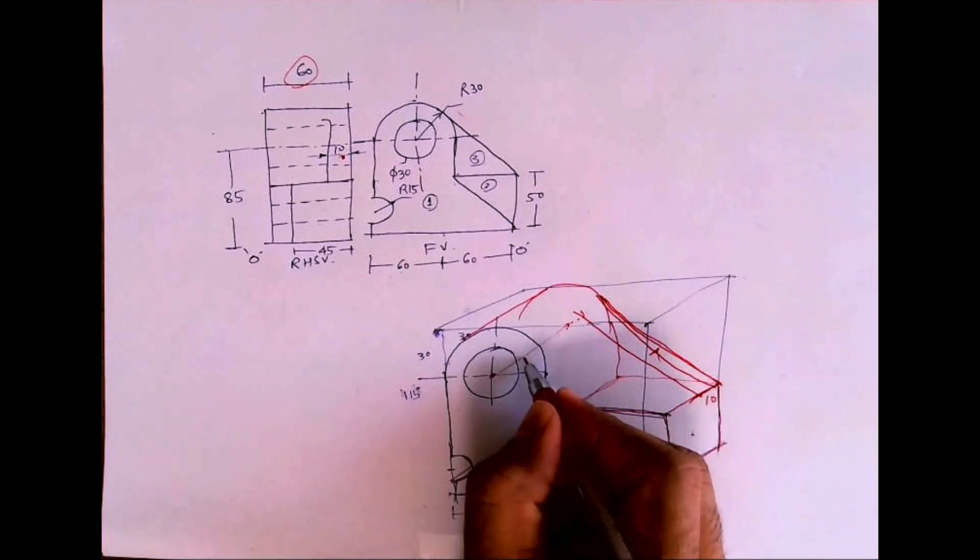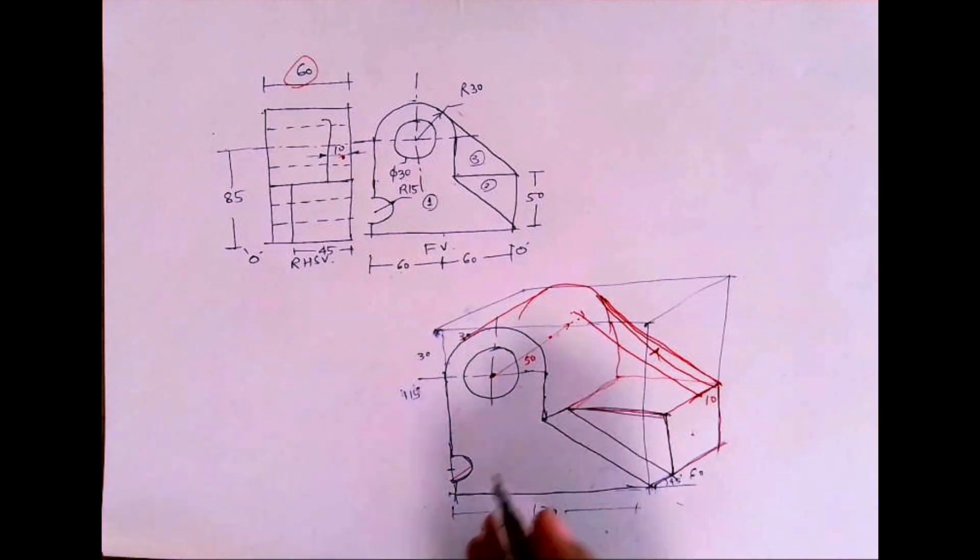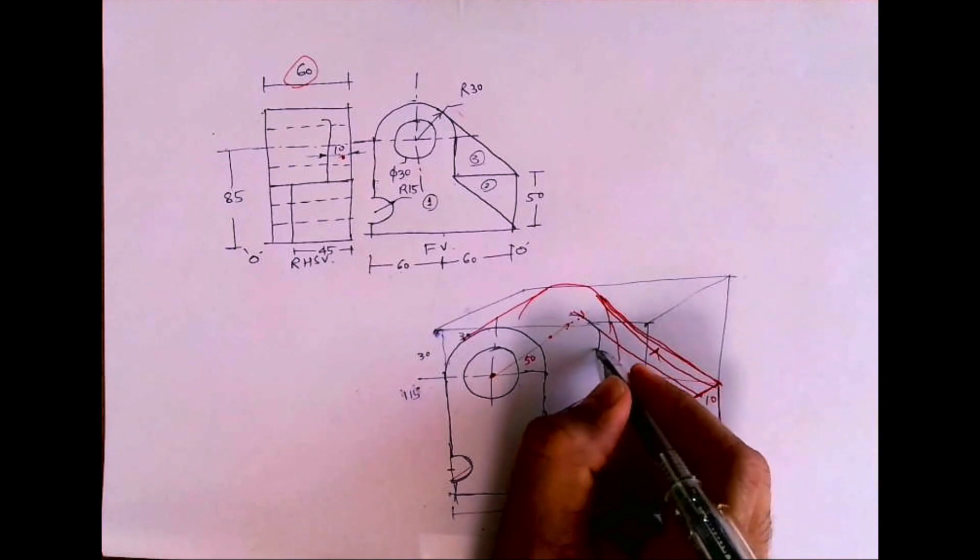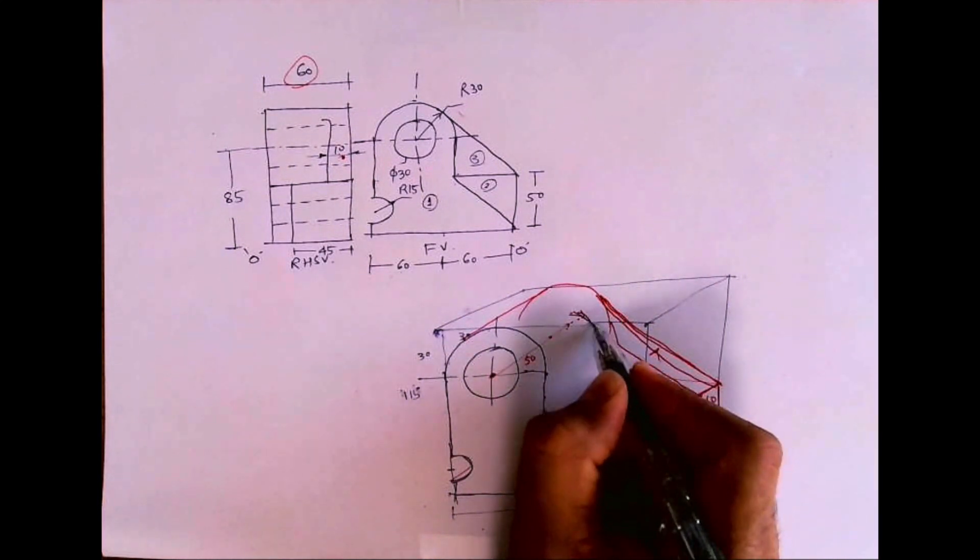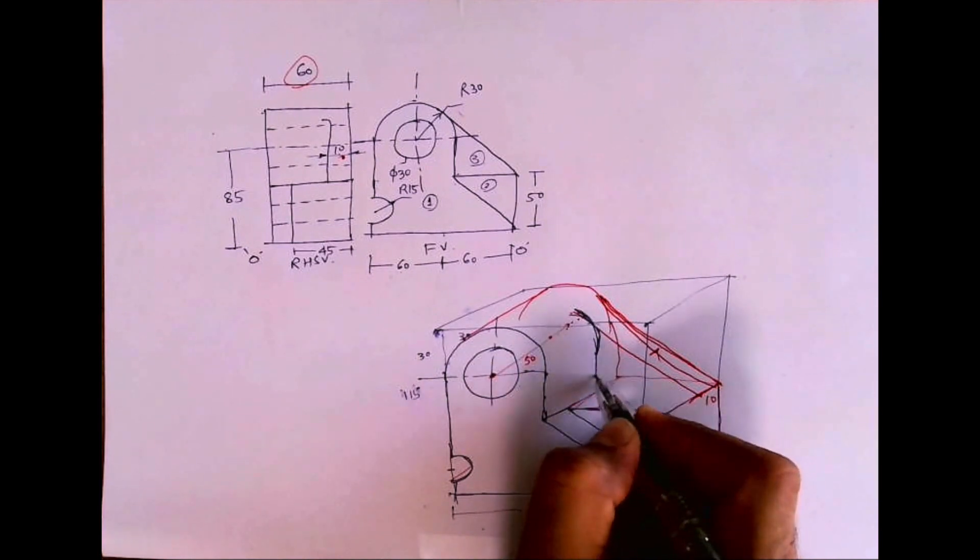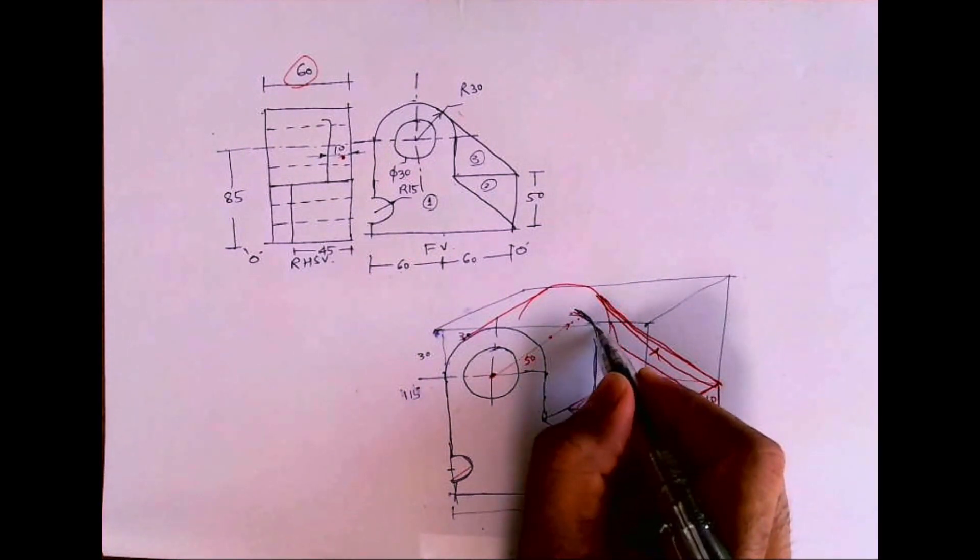Again, you take this radius 50. You go behind by 50. Why? Because 60 minus 10 is 50. And again you draw this curve. This curve will come. Go down and draw a horizontal line. So this is how you get this part.